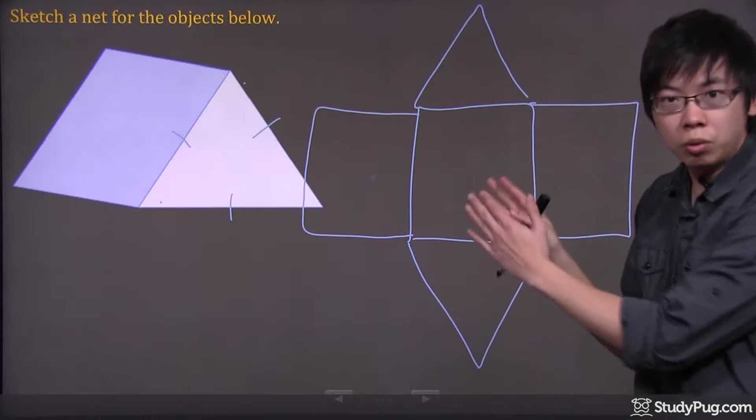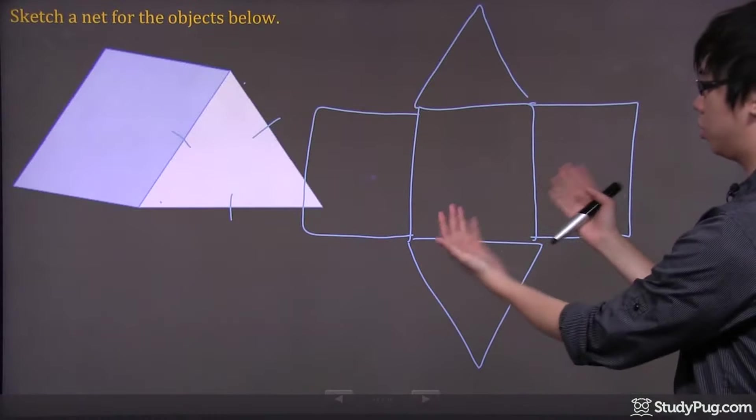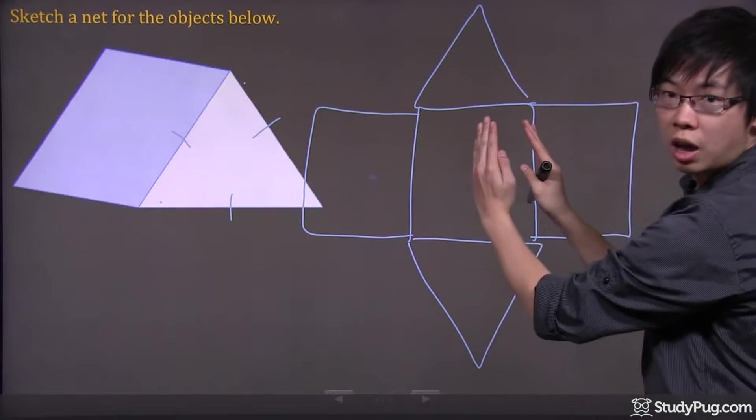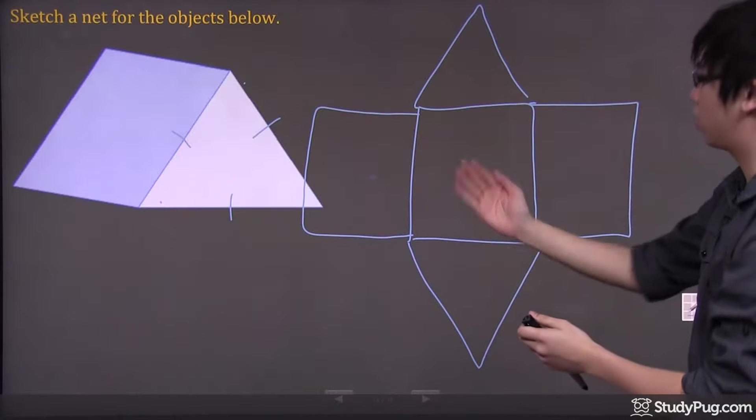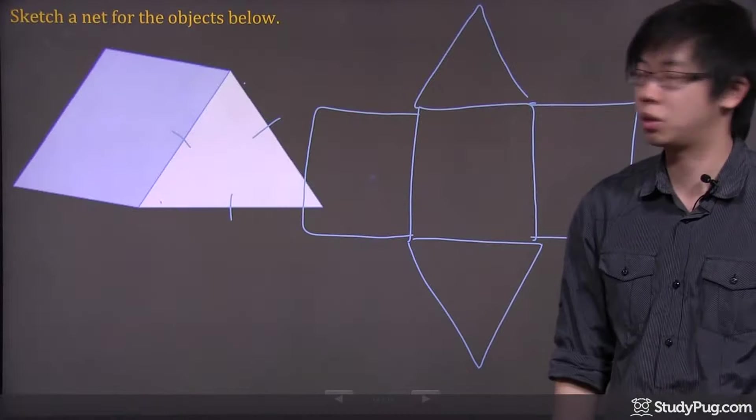So imagine if you actually fold this, if I actually take this and put it flat like this, what happens is you can fold this side, you can fold this side, and then the top and the bottom can all fold it upwards. You get yourself back to the triangular prism.